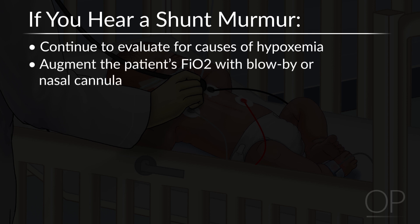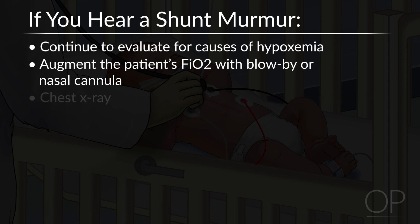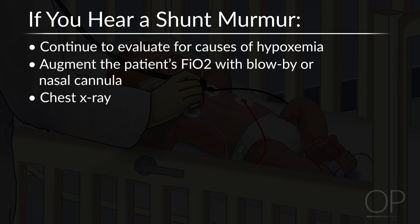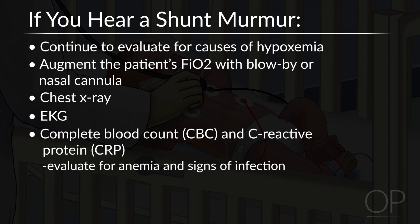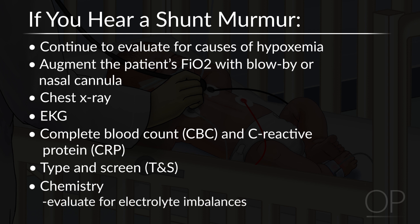Augment the patient's delivered FiO2 with blow-by or cannula. It is rarely wrong to put oxygen on a cardiac patient who is hypoxemic. Even if the reason for desaturation is fluid overload and the patient really needs diuresis, you will not worsen them acutely by giving them oxygen. Response to oxygen also lets you know that there actually is some pulmonary blood flow and some amount of hypoxemia may be due to VQ mismatch. Consider a portable chest x-ray to assess the amount of pulmonary blood flow as well as for signs of infection. Consider getting an EKG to evaluate for arrhythmias.